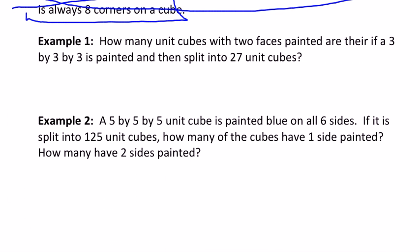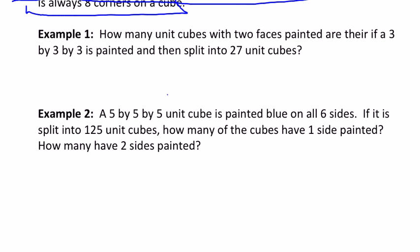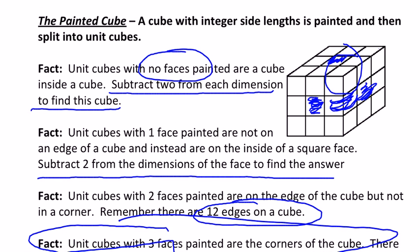So two examples. Example one, how many unit cubes with two faces painted are there if a three by three by three is painted and then split into 27 unit cubes? So again, we can go back to our picture up here. And for each of the edges, there's only going to be one. That cube right there is the only one on that edge.